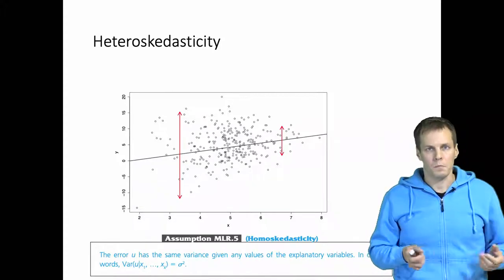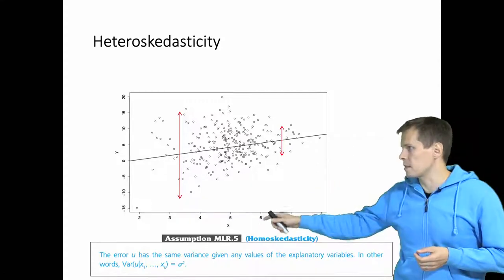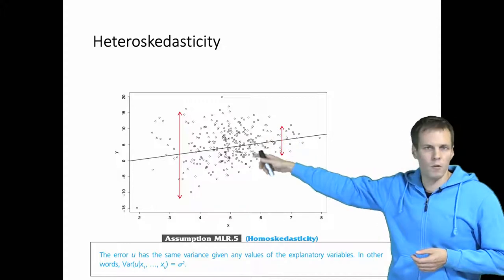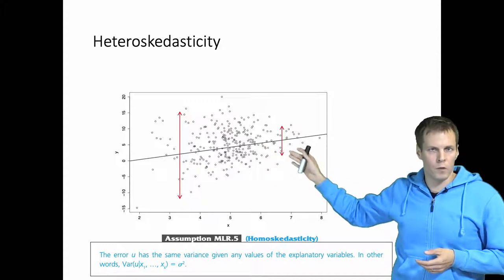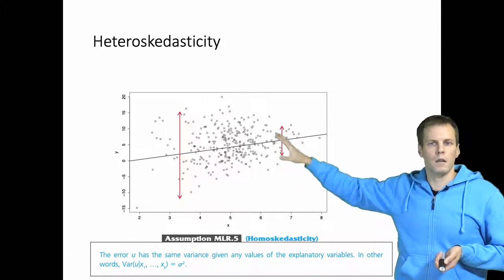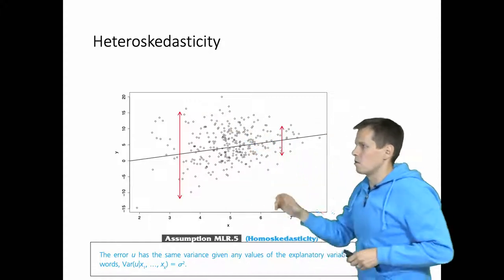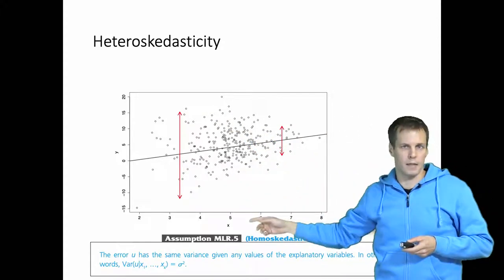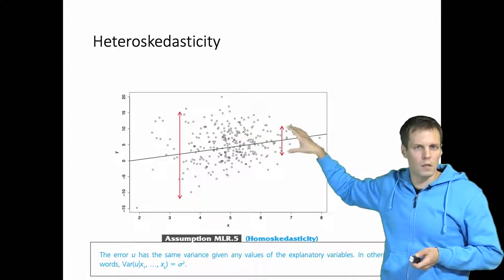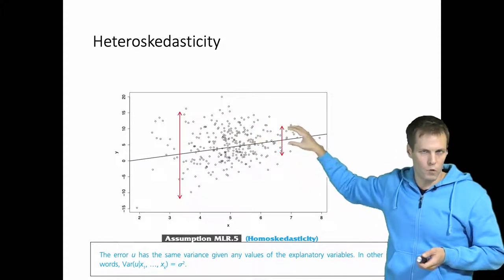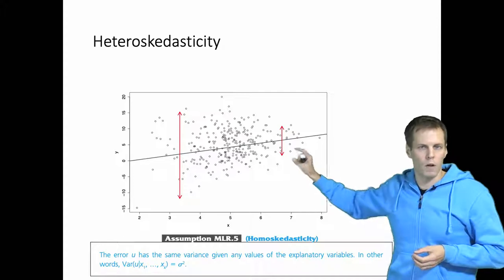Let's start with heteroscedasticity. The idea of heteroscedasticity is that if we have a predictor on the x-axis and then a regression line — the population regression line — and then we have the error term, which is the variation of the observations around the regression line, then the variance of the error term is not constant. In some parts of the regression line there is less variation than in other parts. So the variance basically varies as x varies. The homoscedasticity assumption was that this variance around the regression line is constant, so that the observations don't spread out and don't become closer to the regression line. Of course, you can have many other shapes of heteroscedasticity beyond this simple funnel shape.